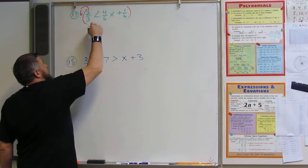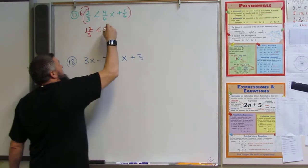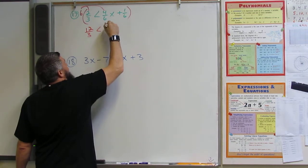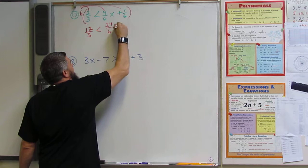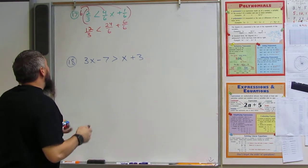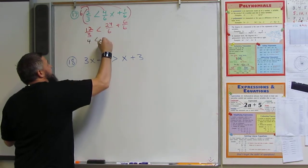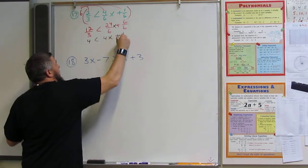So we have 12 over 3 is greater than 24 over 6 plus 6 over 6. Okay, so this is 4 is greater than 4x plus 1.